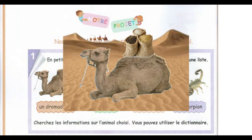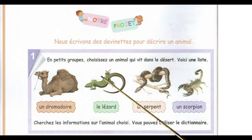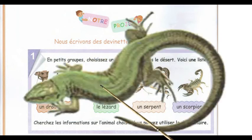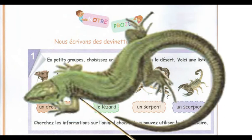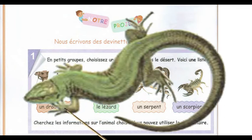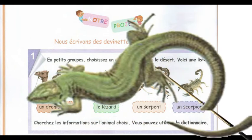Sofiane a choisi le lézard. Le lézard est un reptile. Son corps est recouvert d'écailles. Il a quatre pattes. Il est capable de perdre sa queue.